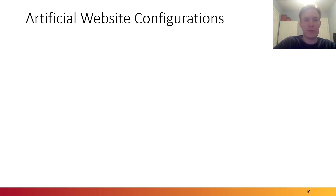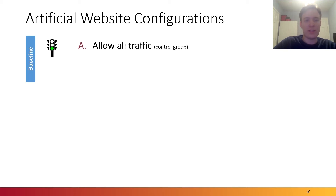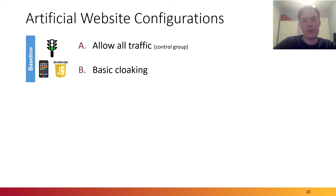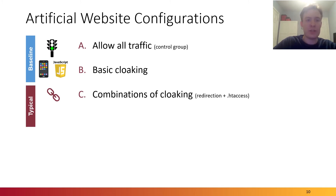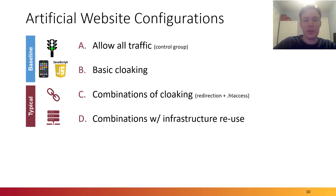Using the insights provided by the Phishtime framework, we defined artificial website configurations to evaluate blacklists. We started with a set of baseline websites that allow all traffic, just to serve as a control group. We also found some websites use very basic evasion techniques, also known as cloaking, such as checking the user agent or checking to see if JavaScript was running in the browser. The more typical phishing websites combined multiple types of cloaking, in particular redirection links from the original email, as well as server-side or client-side evasion. In our experiments, we chose server-side evasion and redirection. We also observed some domains and servers being reused, so we attempted to simulate this by reusing our own domains in certain experiments.